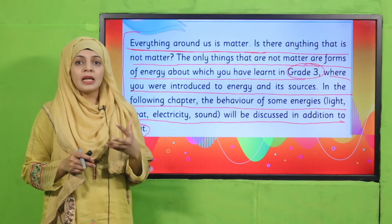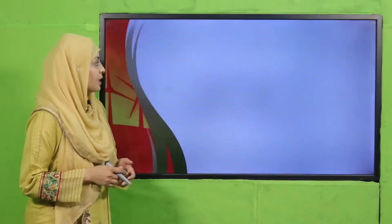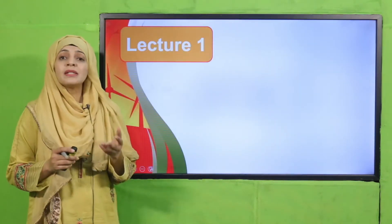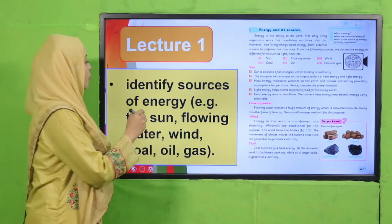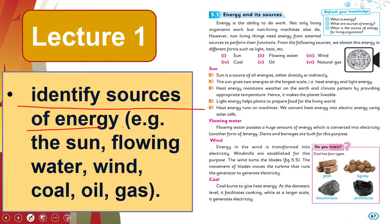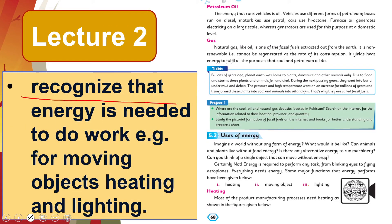We will start from lecture number one. In lecture number one, students will be able to identify sources of energy, for example, the sun, flowing water, wind, coal, oil, and gas. In lecture number two, students will be able to recognize that energy is needed to do work, for example, for moving objects, heating, and lighting.